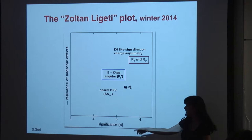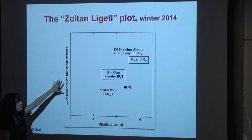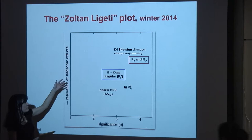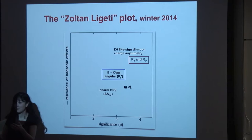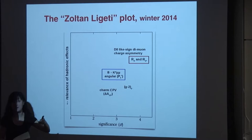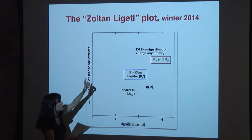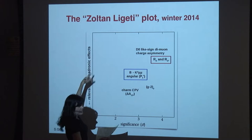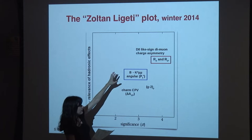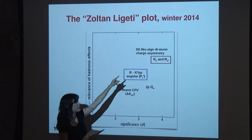On the x-axis you see the significance of the anomaly in sigma. On the y-axis, we put how much we believe in those anomalies, in the sense that some of the clever observables are cleaner and some are less clean theoretically. Some have more hadronic uncertainty and some less. Going in this direction, the observables are becoming more and more clean. We believe more in an anomaly if it is more significant and has less hadronic uncertainty — so more clean.